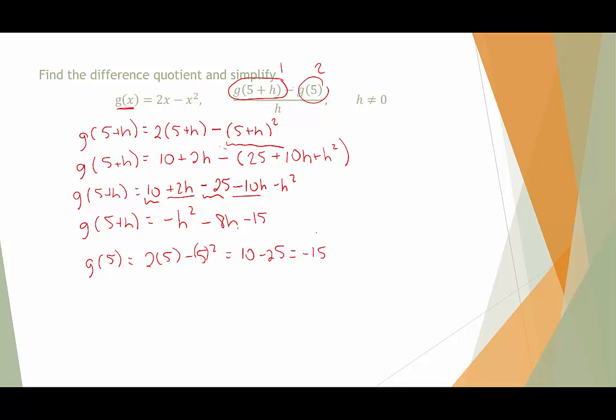So now we're going to bring this all back together. We're going to start with this. Remember, this was the same thing as g(5+h). So that's negative h squared minus 8h minus 15. Then minus, and part 2 was negative 15, all divided by h. So I see here negative 15 minus itself, that's going to cancel. That leaves us with negative h squared minus 8h, divided by h.